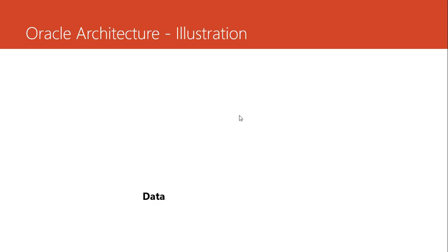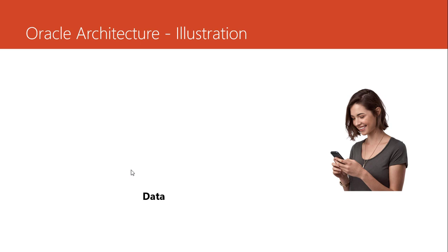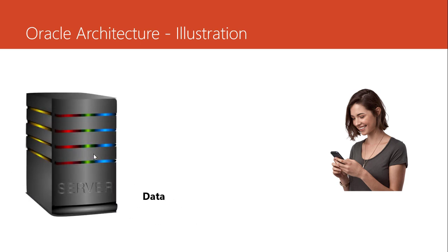Illustrations are much better for explaining these concepts. A user — say Joy, Maria, or Winfrey — needs information from an application like TikTok, WhatsApp, or Twitter. That information is stored on the server or computer where Oracle software is installed. The server is divided into two parts: the instance, which holds memory and background processes, and the database, which stores the actual data files. The data we want is in the database, not in the instance.